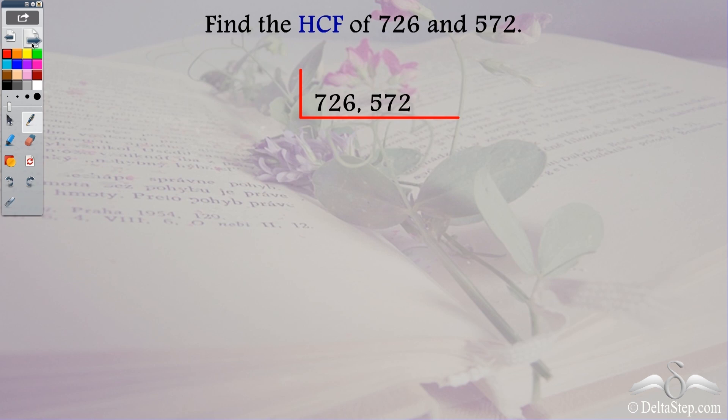So I start with the lowest common prime factor. Let's check for 2. 2 is the lowest prime number. Is 726 divisible by 2? Yes because it is an even number. Is 572 divisible by 2? Yes because it is an even number. So I divide both of them by 2.